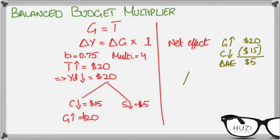And this in turn will lead to a change in Y of change in AE times the multiplier. This means 5 times 4 equals 20.